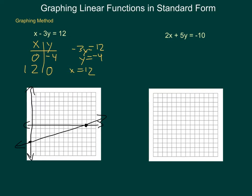Next, we can do this for our second equation. So, I will again make my quick table of values, x and y. If x is zero, then I have 5y equals negative 10.